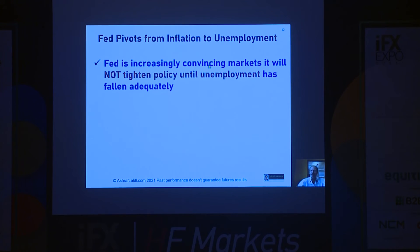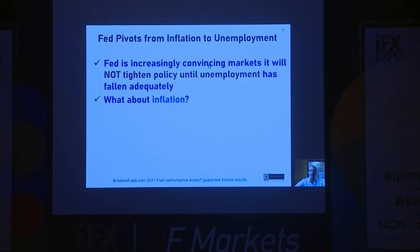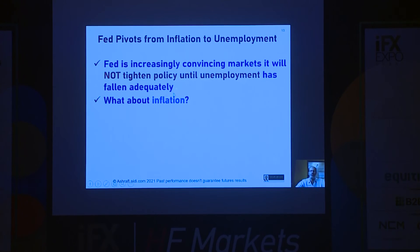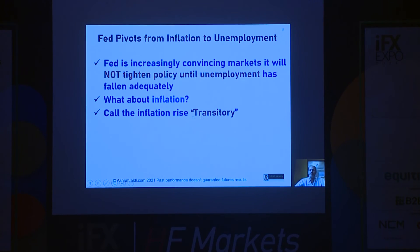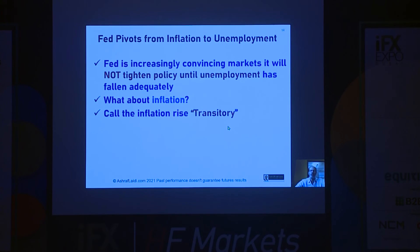When unemployment rises — as with the last disappointing payrolls figure — that is a sell-dollar signal, because the new goalposts the Fed is targeting are not being met. Unemployment is rising, payrolls are disappointing, even as inflation is pushing higher. So until when will they ignore inflation and target unemployment? They're calling inflation transitory, temporary, not lasting — supply-driven, not demand-driven. Yes, the market is reopening, but it's supply-driven.